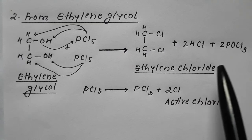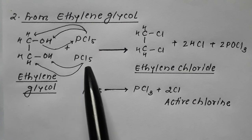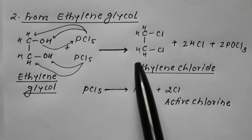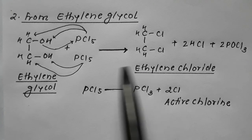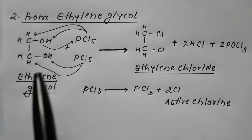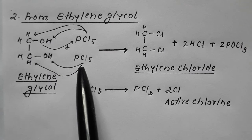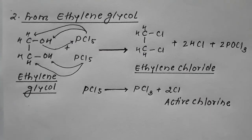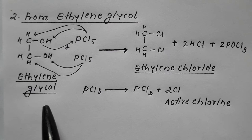The second molecule of PCl₅ behaves the same way — one Cl attaches to the second carbon, converting it to CH₂Cl. This means ethylene glycol reacts with PCl₅ in a 1:2 ratio — one molecule of glycol with two molecules of PCl₅ — resulting in formation of ethylene chloride, that is 1,2-dichloroethane.